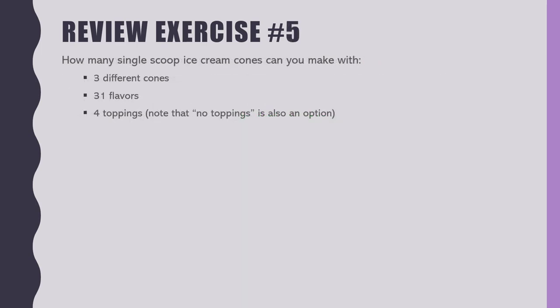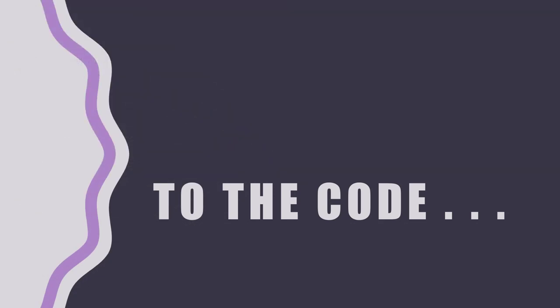How many single-scoop ice cream cones can you make with three different cones, 31 flavors, and four toppings — where no topping is also a possibility? This is a product rule problem. Let's go to the code — I made a database called ice cream last night.